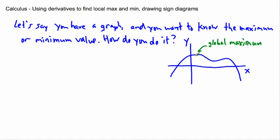Now let's look at this point right here. In a little localized area, if we only had our blinders on and could only see this little area, then we would say, oh, that's a minimum. But it's not the global minimum — it's not the smallest value the graph can reach, because it can actually reach lower, way lower in Y values. So this one right here we call a local minimum — min for short.